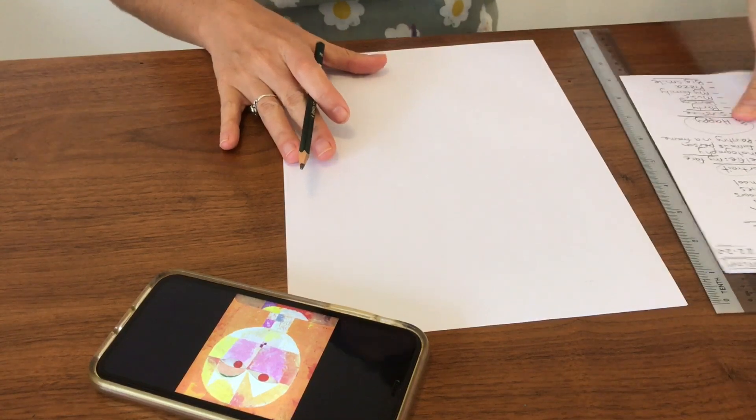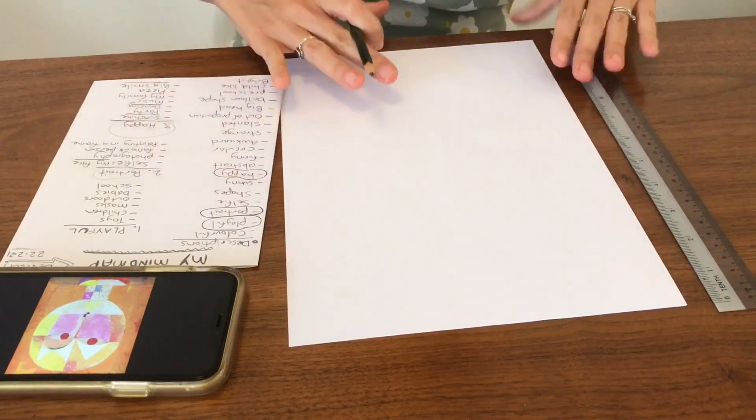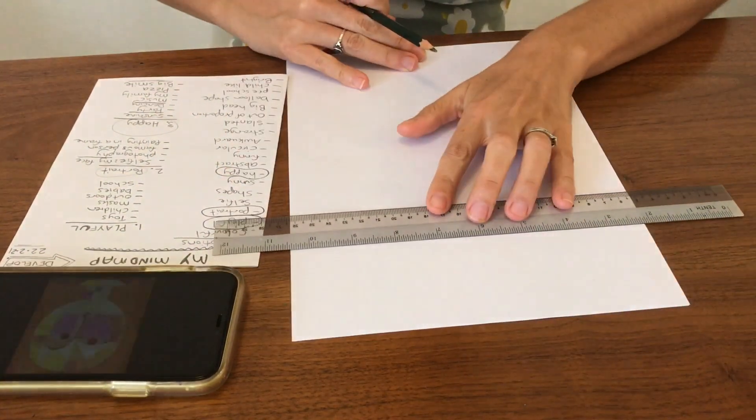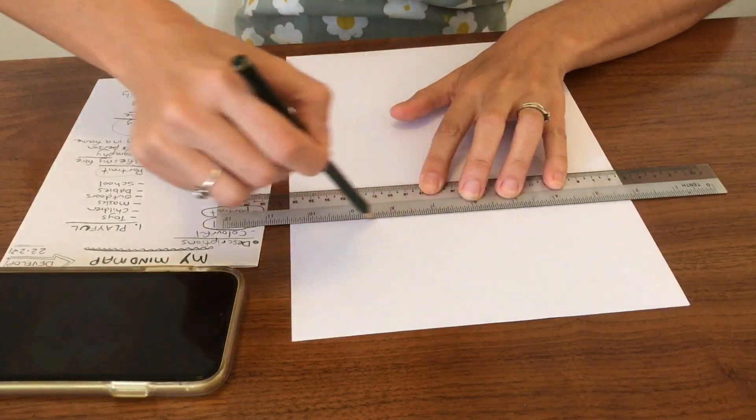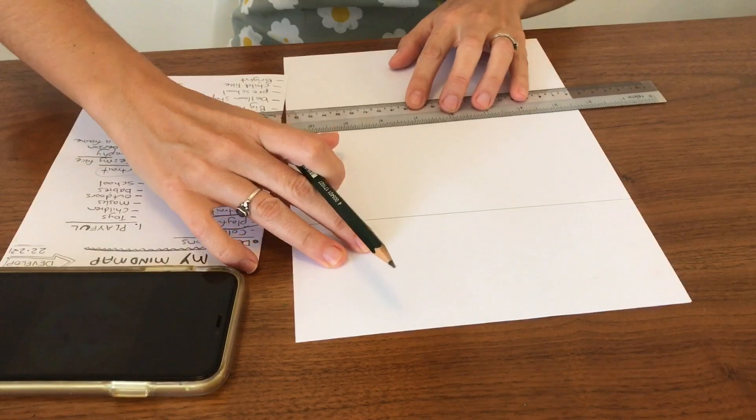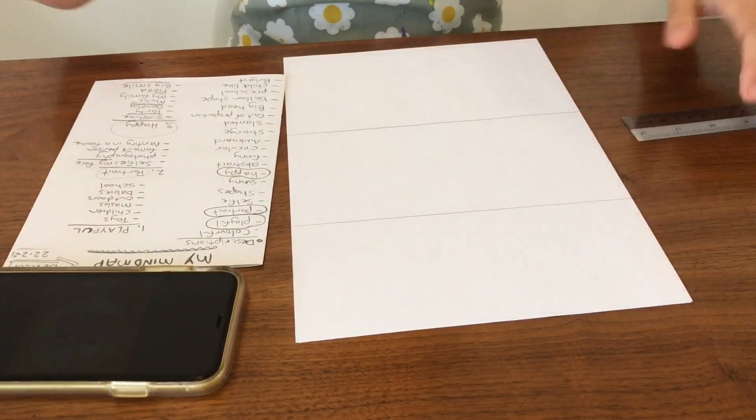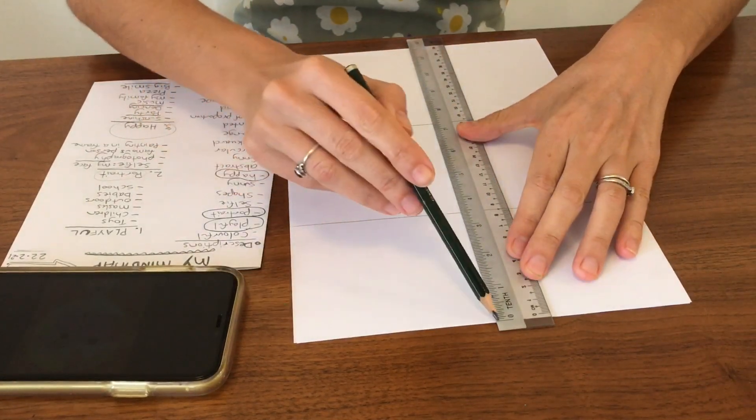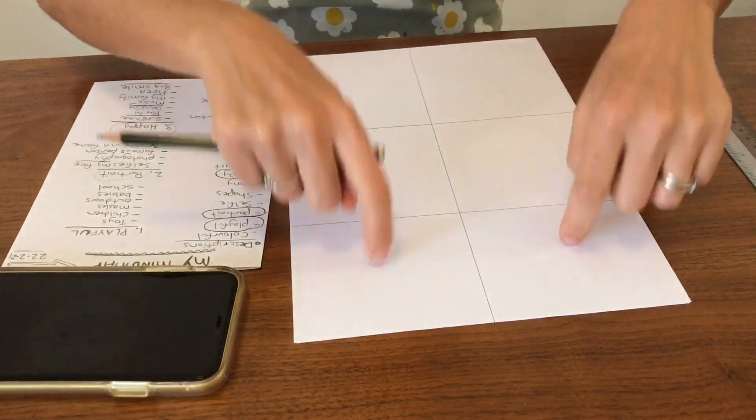So with my mind map here, I'm going to start by using the ruler to have my page portrait. And I'm just going to split it into some sections here. It doesn't have to be perfect. You can see I have three areas now on my page. One, two, three. And I'm going to split it down the middle. You can see I'm not measuring this, but it gives me six boxes.